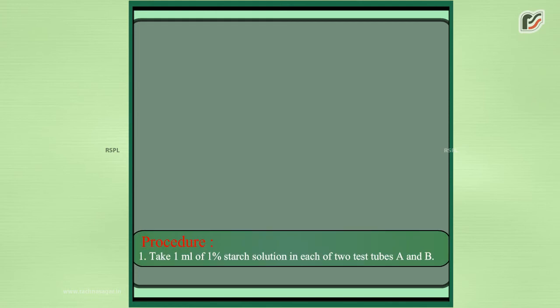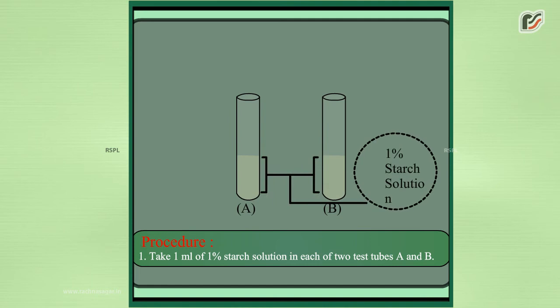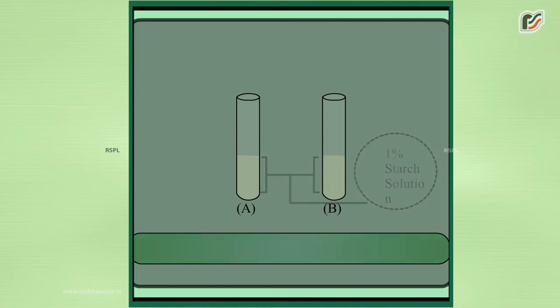Procedure: 1. Take 1 ml of 1% starch solution in each of 2 test tubes A and B.